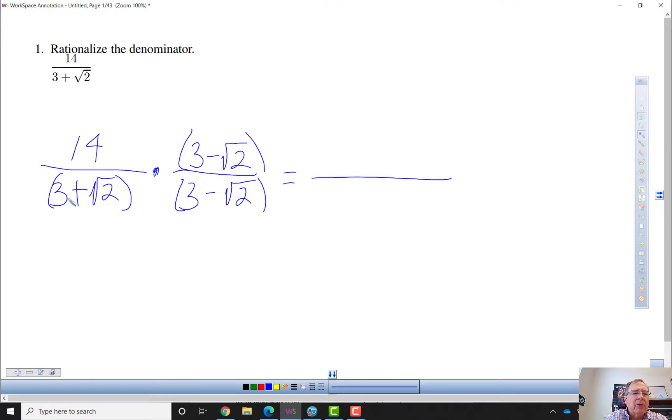So in the denominator, we're using the pattern A plus B times A minus B equals A squared minus B squared. So it's a difference of two perfect squares. So if we have the factored form,